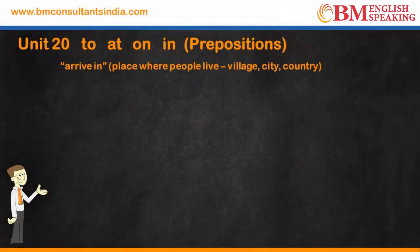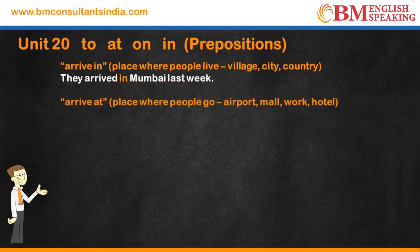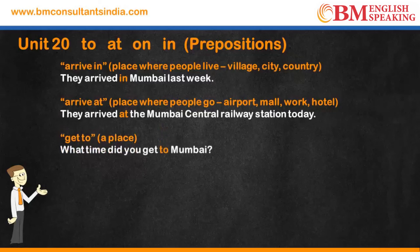Use 'arrive in' for a place where people live — a village, city, or country. They arrived in Mumbai last week. Use 'arrive at' for places people go to, like an airport, mall, work, or hotel. They arrived at the Mumbai Central Railway station today. Use 'get to' for reaching a place — what time did you get to Mumbai?